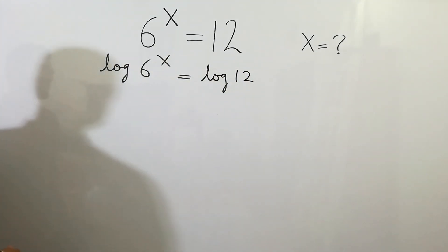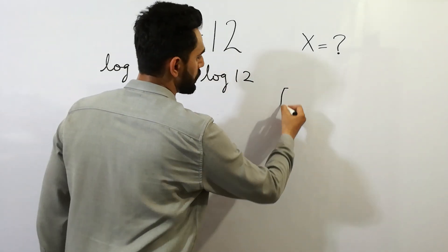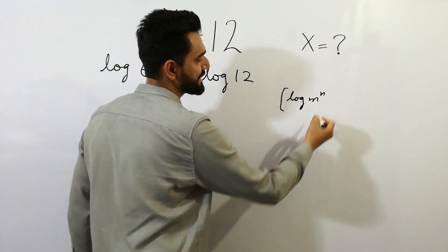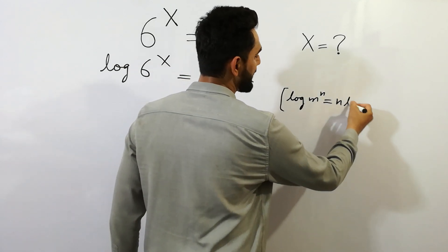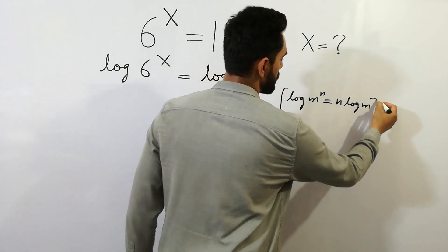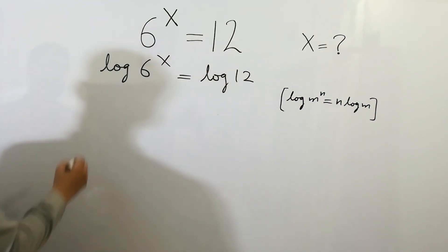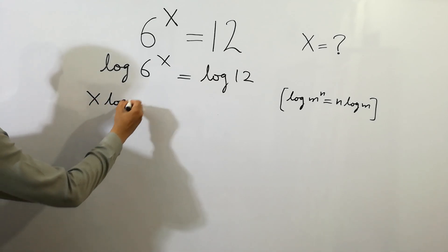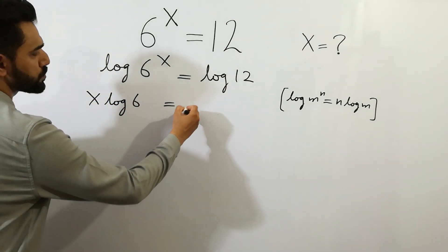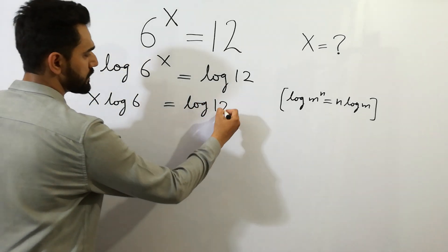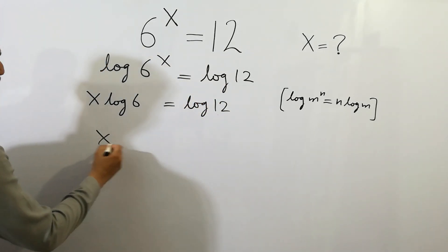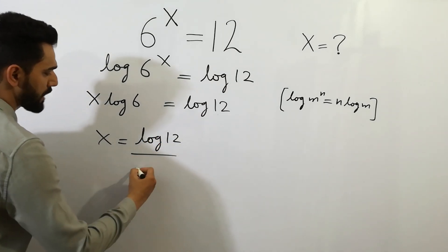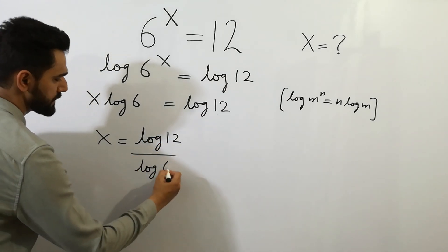As you know that log m to the power n is equal to n log m, so we can write x log 6 is equal to log 12, and x is equal to log 12 divided by log 6.